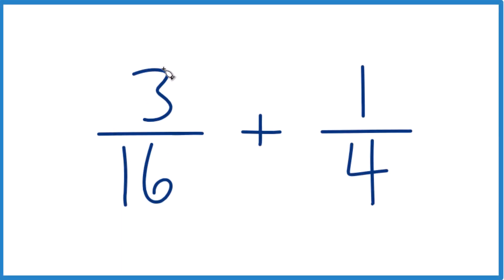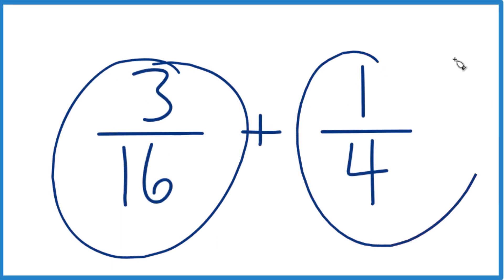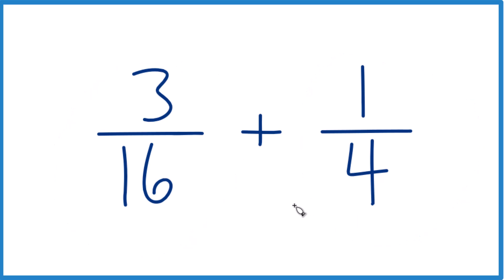So let's add the fractions 3/16 and 1/4 together. Here's how you do it. First, you need to get a common denominator.